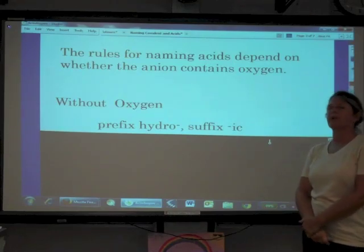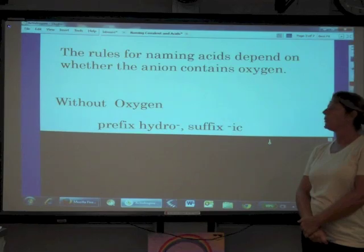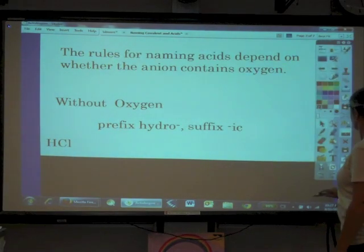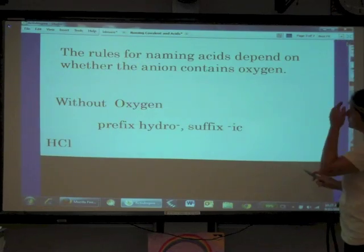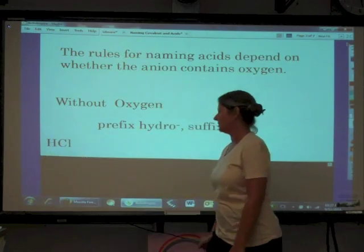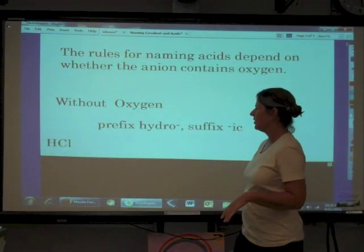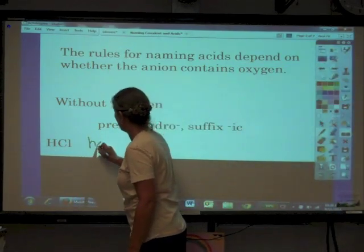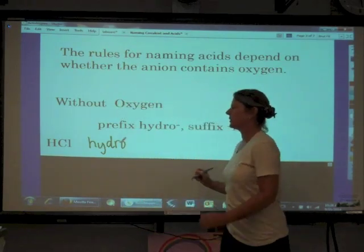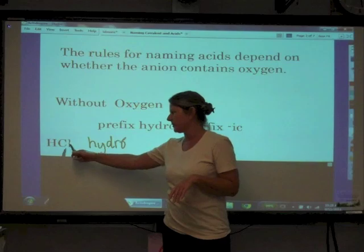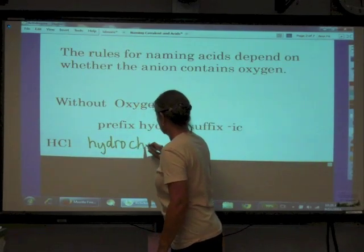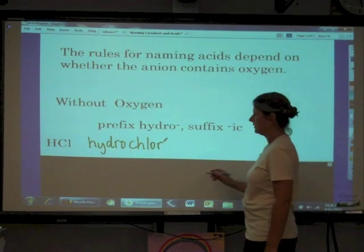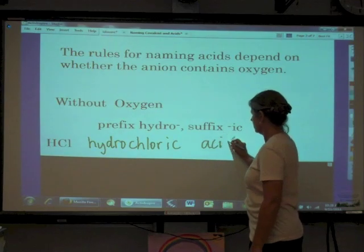For acids with no oxygen in the anion, we always use the prefix 'hydro' and the suffix '-ic.' So for HCl, there is no oxygen in the anion, so we say 'hydro-' then take the root of the anion: 'chlor-,' then add '-ic.' The result is hydrochloric acid.